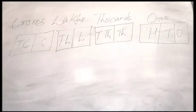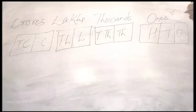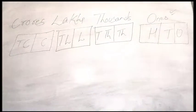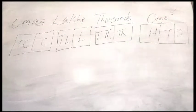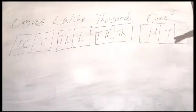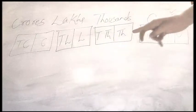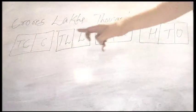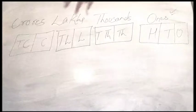As you can see over here I have written some numbers like ones, thousands, lakhs and crores. For a particular number I have made some sections: for ones it is ones, tens, hundreds; for thousands it is thousand and ten thousand; for lakhs it is lakhs and ten lakhs; and for crores it is crore and ten crores.